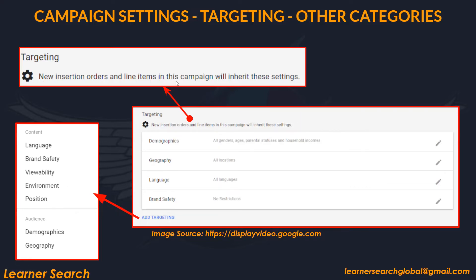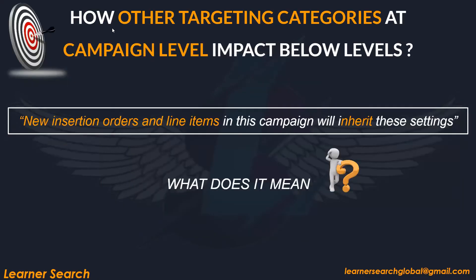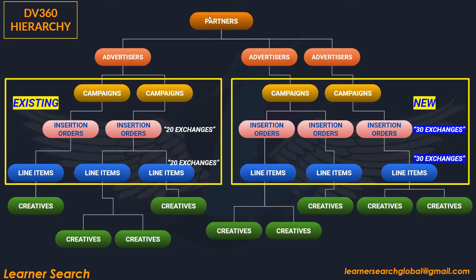New insertion orders and line items in this campaign will inherit these settings. There is a hierarchy — partner, advertiser, campaign, IOs, and line items. For example, if an existing advertiser has 20 exchanges inherited, new IOs and line items inherit those exchanges whereas existing ones are not impacted. This is the same concept we saw at partner level, now applied at the advertiser/campaign level.